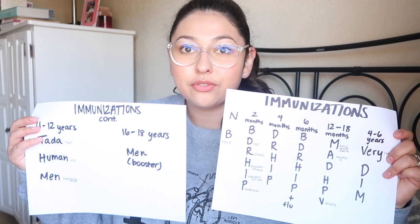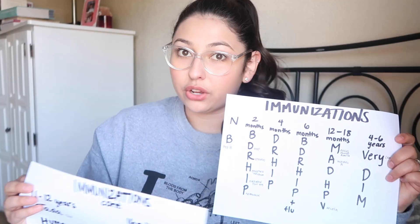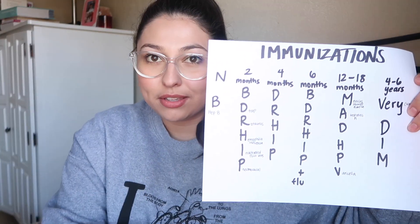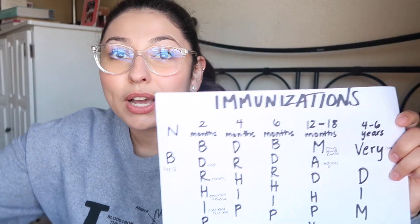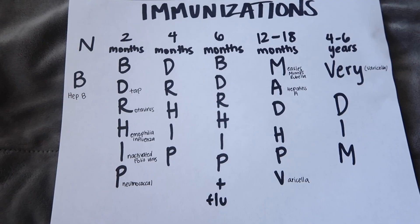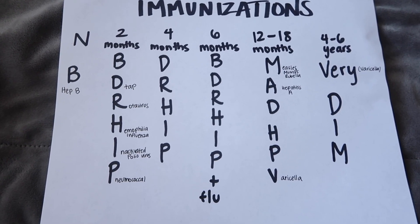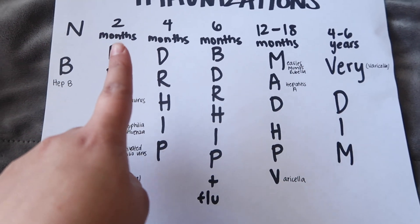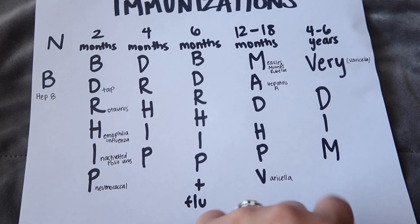I did just that for you guys, and what I'll do is just show you guys the chart and talk you through it. I'll go ahead and move my camera so you guys can see. Here is the immunization chart for all the immunizations that are due at different age ranges. N is for newborn, and then I broke it up into two months, four months, six months, 12 to 18 months, and four to six years.